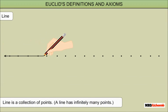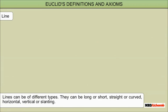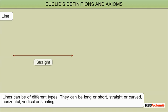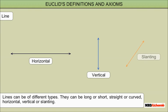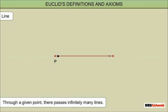Line: A line is a collection of points. A line has infinitely many points. Lines can be of different types — they can be long or short, straight or curved, horizontal, vertical, or slanting. The ends of a line are points. Through a given point, there pass infinitely many lines.